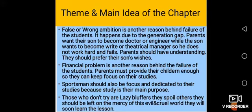Another category is false or mistaken ambition, which is another reason behind a student's failure. A student wants to become something else while the parents want him to study another subject — this leads him toward failure. It happens due to the generation gap. Parents want their son to become a doctor or engineer while the son wants to become a writer or theatrical manager, so he does not work hard and fails. Parents should understand and prefer their son's wishes.